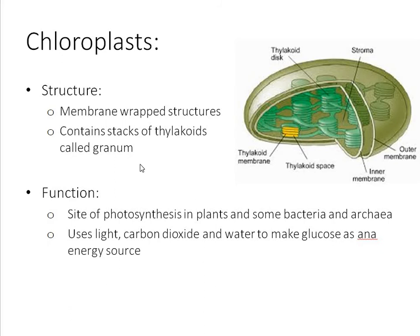Sticking with plants, we have chloroplasts. Structurally, these are membrane-wrapped structures that contain stacks of thylakoids called grana. They are double-membrane structures in plants containing these little stacks — singly called thylakoids, plural grana. Functionally, they are the site of photosynthesis in plants and some bacteria and archaea. Using light, carbon dioxide, and water, plants are able to make glucose as an energy source. This can also happen in some bacteria and some archaea.